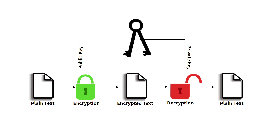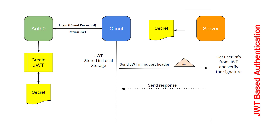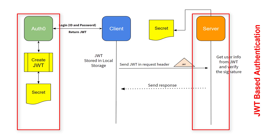In asymmetric encryption, the private key is only shared with the key initiator since its security needs to be maintained. Although asymmetric encryption offers a higher level of security compared to symmetric encryption, it is more complicated and needs more time to decrypt the text. If two parties are involved, we should use asymmetric encryption. But for this tutorial, both encryption and decryption are done on the same server, so we are going to use symmetric encryption.